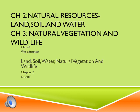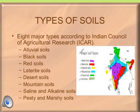Types of soil: in ancient India, soil was classified on the basis of its fertility. India, with its varied rocks, relief, climate and vegetation, has a great variety of soil. The following types of soils are found in India: alluvial soil, black soil, red soil, laterite soil, desert soil, mountain soil, saline and alkaline soil, and peaty and marshy soil.